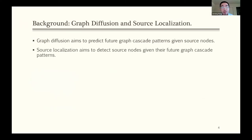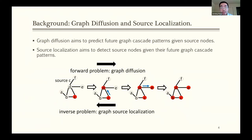As a fundamental learning task, graph diffusion aims to predict the future cascade patterns given some source nodes. While as an inverse process, source localization aims to detect source nodes given their future cascade patterns. Here I give you an example. From the figure, from left to right, we give the process of graph diffusion. Given the source node C, after three time steps, we can get the graph cascade pattern B, C, D, and E. For the source localization, we aim to detect source C given the cascade pattern B, C, D, and E.